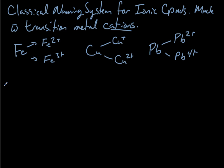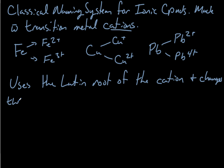Alright, so now we need to do some Latin. So how this system works, the Classical naming system, what it does is it uses the Latin root of the cation and changes the ending to ic or ous, depending on the charge.